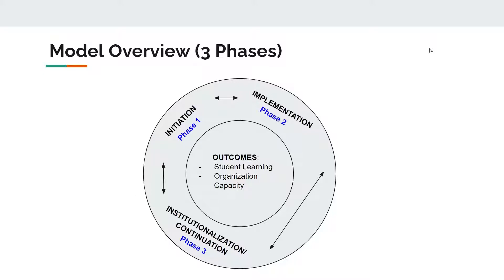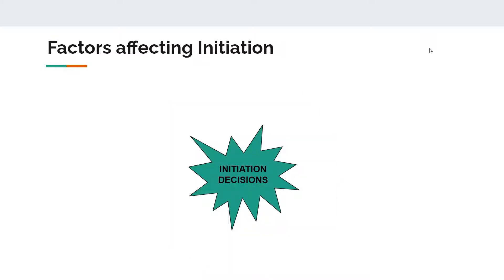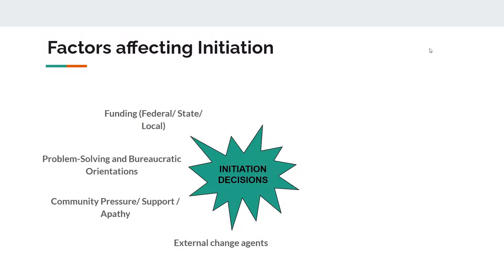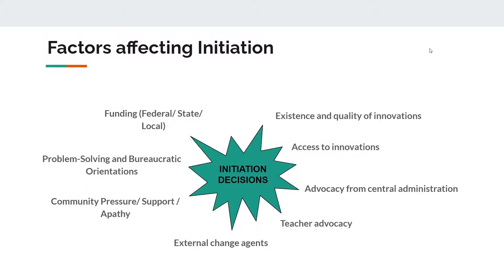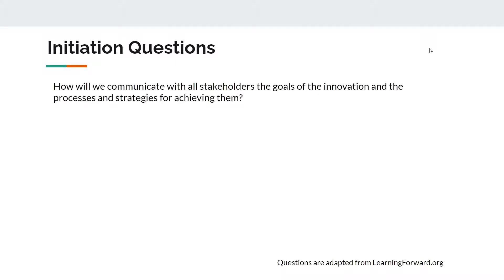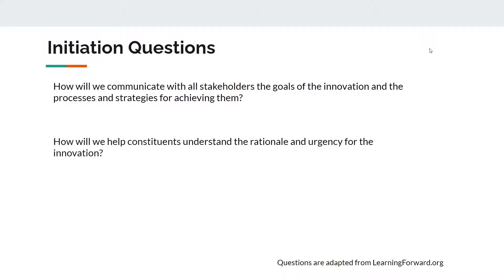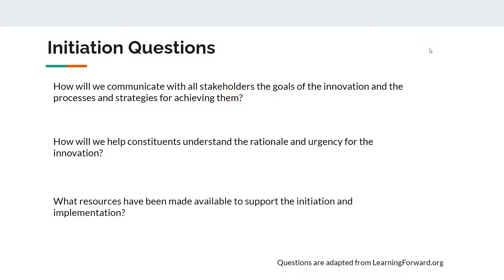On the next few slides we'll look at the factors and impact of each of these phases. Initiation looks at several factors similar to other human performance improvement models. Initiation is impacted by organizational environmental factors such as community pressure, involvement, development, funding, and teacher attitudes towards the change and access to innovations. Some questions to consider in the initiation phase: How will we communicate with all stakeholders the goal of the innovation and the processes and strategies for achieving them? How will we help constituents understand the rationale and urgency for the innovation? What resources have been made available to support the initiation and implementation?